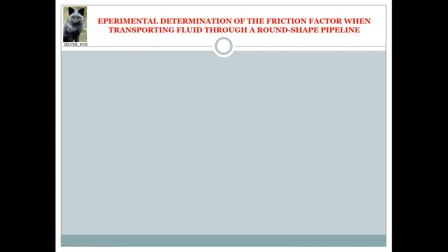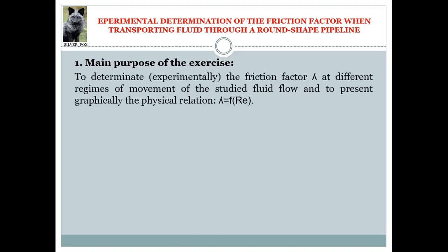Hi everyone. In this video tutorial I am planning to demonstrate a method used to experimentally determine the friction factor of a round cross-section pipe transporting fluids. For this aim we are going to use a specialized laboratory test system. The main purpose is to determine experimentally the friction factor lambda obtained at different regimes of fluid flow movement, and to present graphically the relationship where lambda is given as a function of Reynolds number.